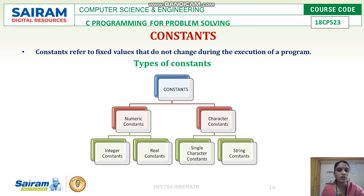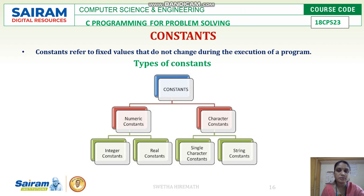In numeric constants, we have two different types: integer constants and real constants. If a number holds only the whole part, it is called an integer constant. If it holds the decimal or fractional part as well, we call it a real constant.